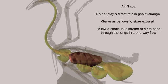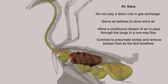They are also connected to certain pneumatic bones, aiding the bird in shedding excess heat from its body as it breathes, which would be fatal if not removed.